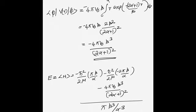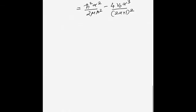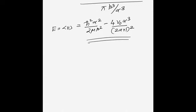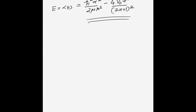Checking the expression — there may be a minor factor issue which is corrected. This is our energy expectation value E(α). In the variational principle, the next step is to minimize this energy with respect to the variational parameter α.